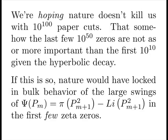We're hoping nature doesn't kill us with 10 to the 100 paper cuts. But somehow the last few 10 to the 50 zeros are not as important, or certainly not more important than the first 10 to the 10 zeros, especially given the hyperbolic decay of everything. If this is so, nature would have locked in bulk behavior of large swings of our pi of x in the first few zeta zeros, whatever few means.